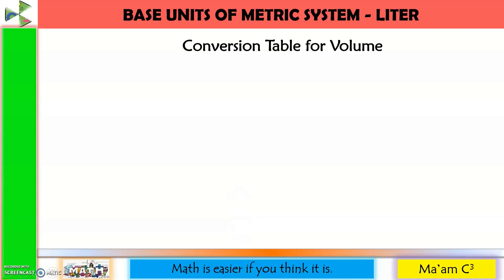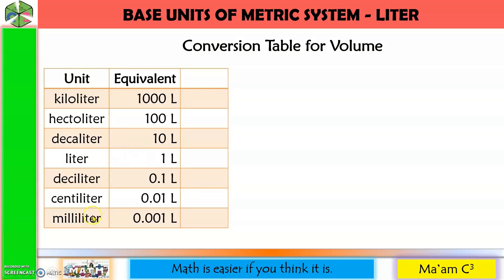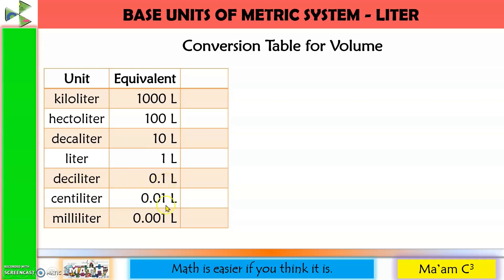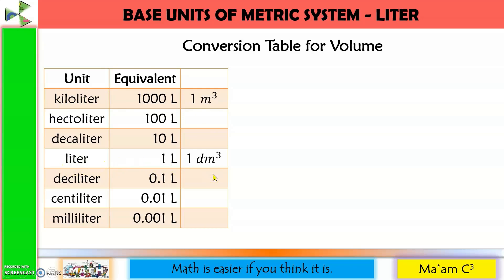Here is the conversion table for volume. The hierarchy of units in liter is the same as in meter: from the base unit going up, each step multiplies by 10 — 10 liters is a decaliter, 100 liters is a hectoliter, and 1,000 liters is a kiloliter. Going down from the base unit, 0.1 liter is a deciliter and 0.001 liter is a milliliter. Notably, 1 kiloliter equals 1 cubic meter, 1 liter equals 1 cubic decimeter, and 1 milliliter equals 1 cubic centimeter.